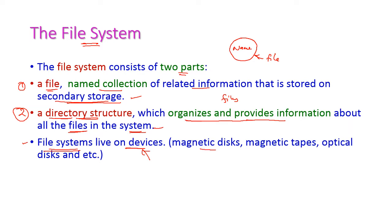For example, magnetic disk, magnetic tape, optical disk, etc. Hard disk is also a secondary storage device.